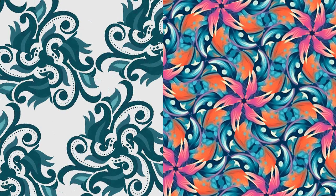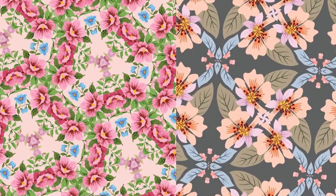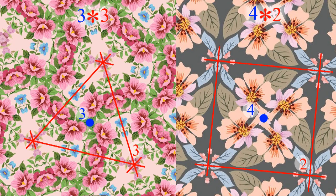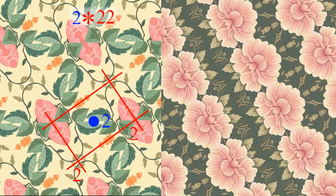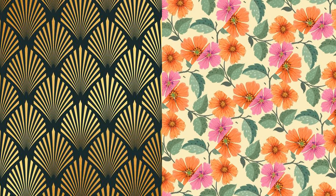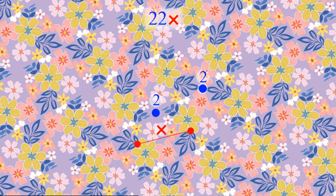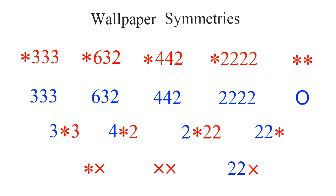The numbers are the same for rotational symmetries: three-two-three-three, six-three-two, four-four-two, and two-two-two-two-two-two. We can also have just a translation, which the book calls a wonder. We can have both rotations and reflections, like three-star-three, four-star-two, two-star-two-two, and two-two-star. We can also replace an individual reflection with a miracle reflection, giving us star-cross, cross-cross, and two-two-cross. If you've been counting, that's 17 wallpaper symmetries.